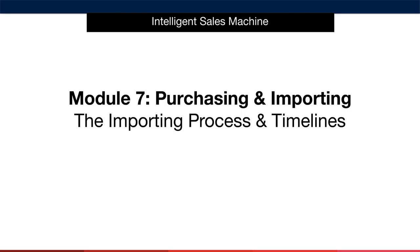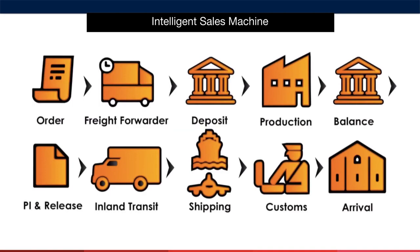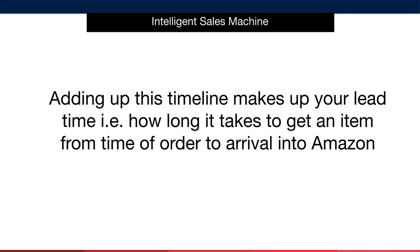To finish out this module, I want to talk about some of the timeliness associated with importing your items. My intention is not to give you any hard and fast rules. Rather, it's to give you an idea of what's normal so that you know what to expect from your first to your 50th shipment. I already talked about the process in detail earlier, so I'm not going to go through this step by step again. Instead, I simply want to add some timelines in here for you, both for air and sea freight. Adding up this timeline makes up what I call your lead time — that is how long it takes to get an item into stock from time of order to arrival into Amazon. As you grow your business, your lead times will become more and more important as you manage multiple SKUs globally.